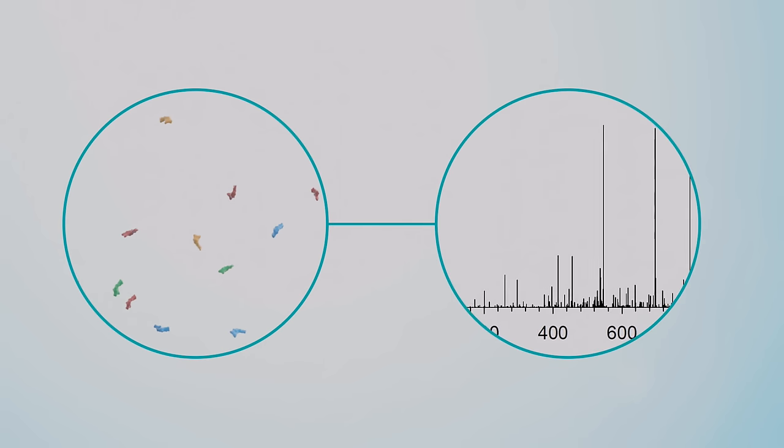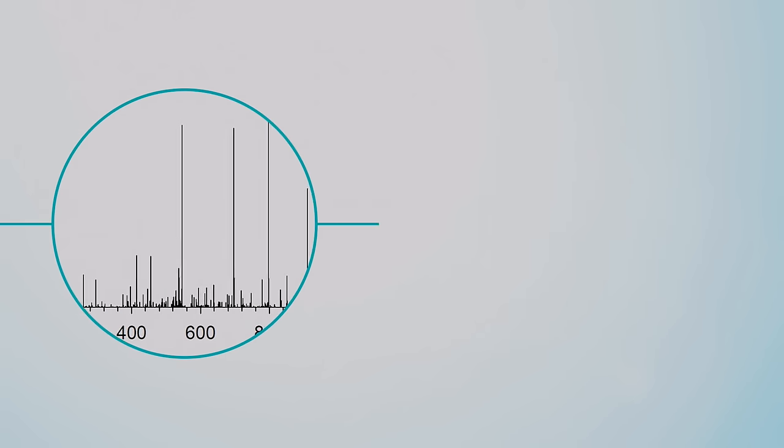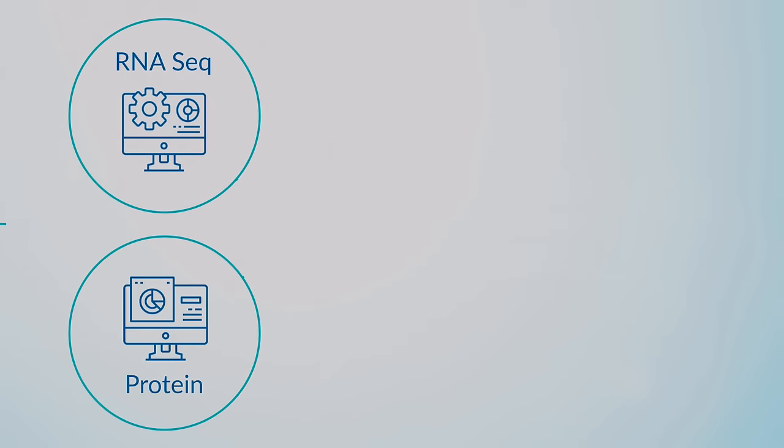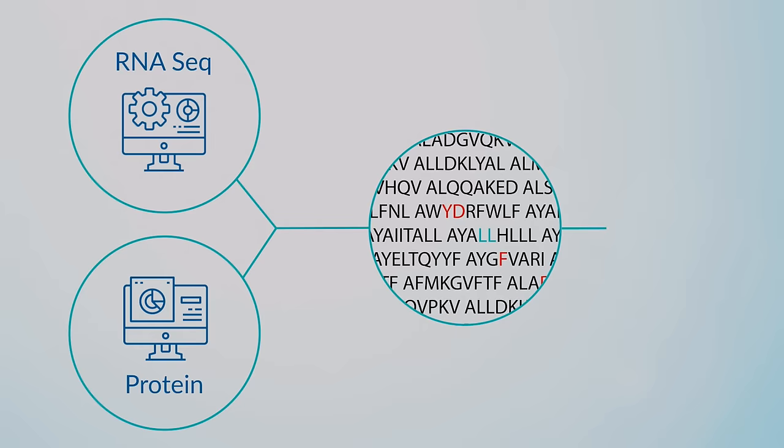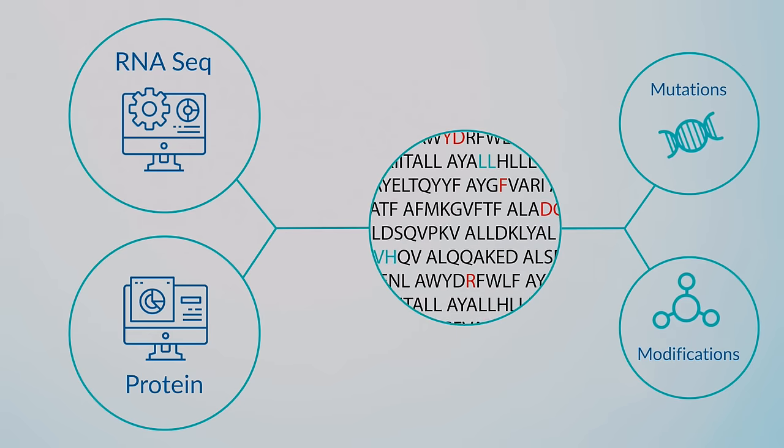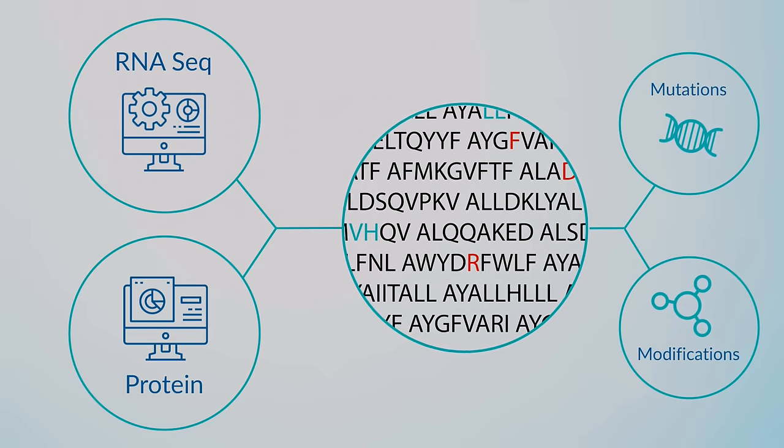Eluted peptides are sequenced by liquid chromatography with tandem mass spectrometry and then matched to protein sequence databases or RNA-seq data. The resulting list of peptides can also be analyzed for mutations and post-translational modifications to facilitate the identification of potential neoantigens.